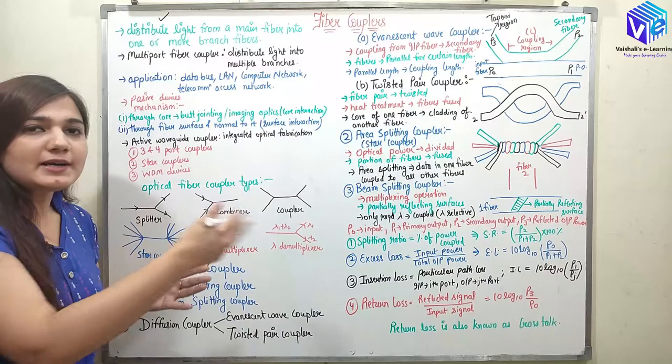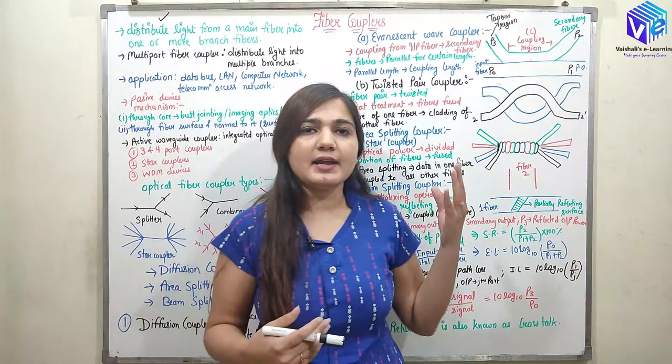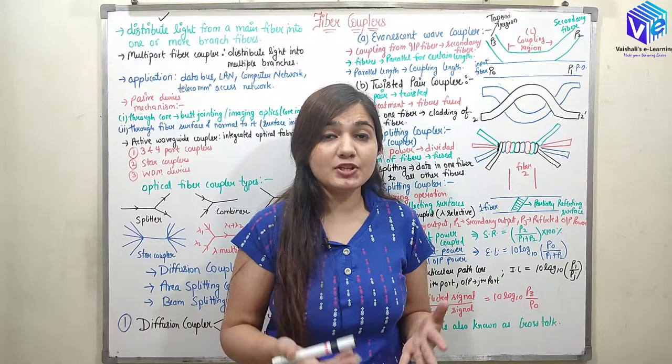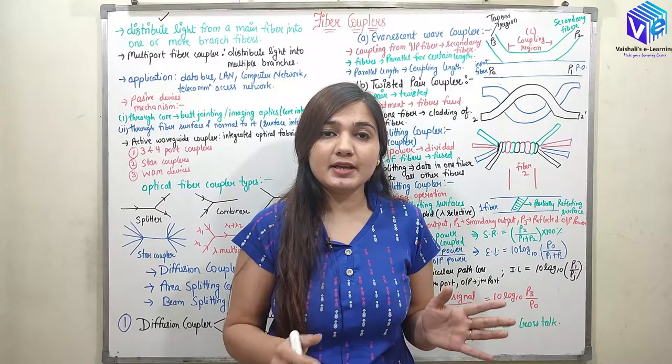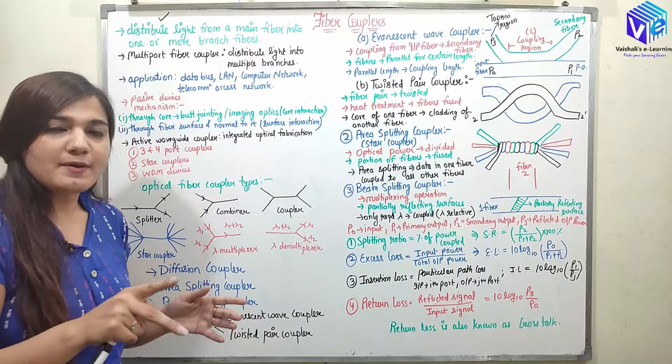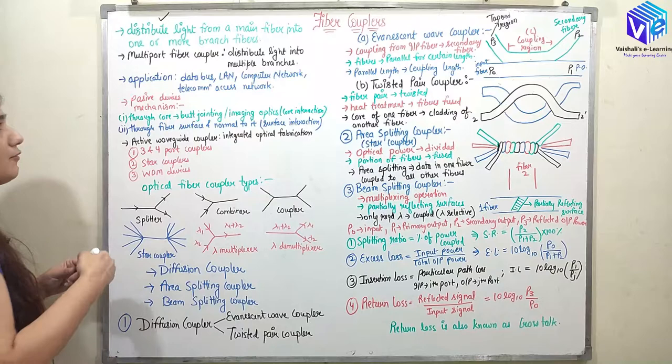This process is really important because sometimes we want to distribute the signal to multiple fibers. If I want to send the signal to a single receiver, I can do it with a single optical fiber. But if I have two receivers from which I have to simultaneously send the signal, I will use the coupling action — sending the signal to two fibers using coupling.